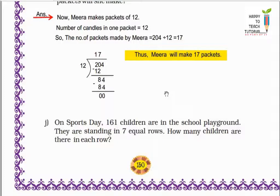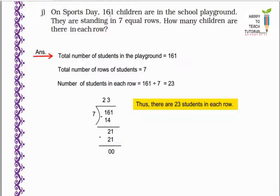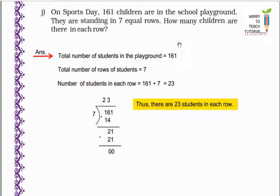On sports day, 161 children are in the school playground. They are standing in 7 equal rows. How many children are there in each row? Total 161 bachche hain aur 7 rows mein khade hain. Toh ek row mein kitne bachche honge? So here we do 161 divided by 7. We get 23 as the answer. That means there are 23 students standing in each row.